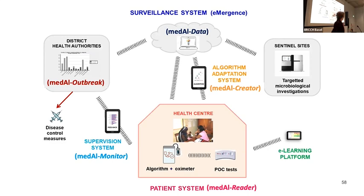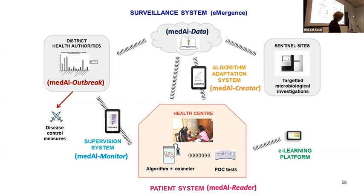All this data sent from tablets at health centers goes to our servers — currently at research institutions in the countries, but aimed at being at the government level. We also enhance the system by providing mentoring to clinicians, showing them their own data so they can see how they perform compared to others. We do this in a positive way, not as policing. We also added targeted microbiological investigation, looking at data patterns that suggest an epidemic — for example, suddenly seeing many children with diarrhea — and providing reports and dashboards so governments can follow and take decisions.